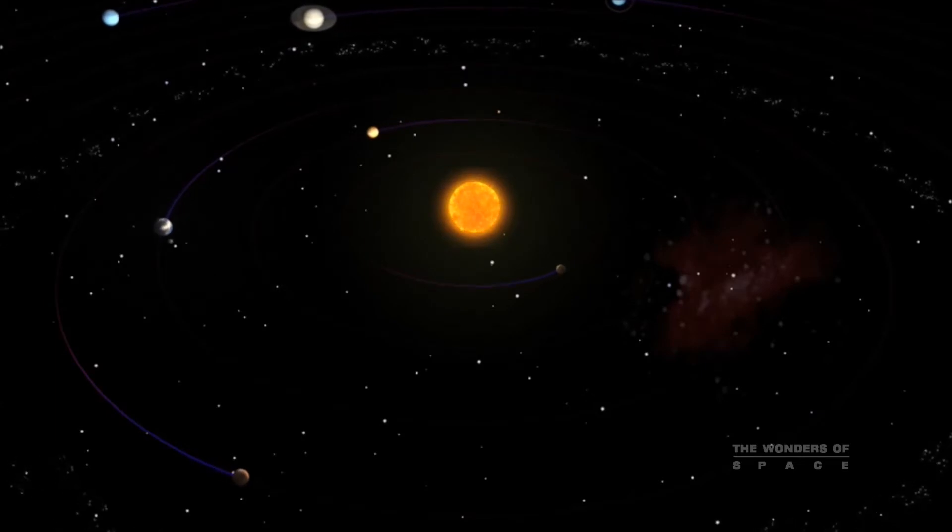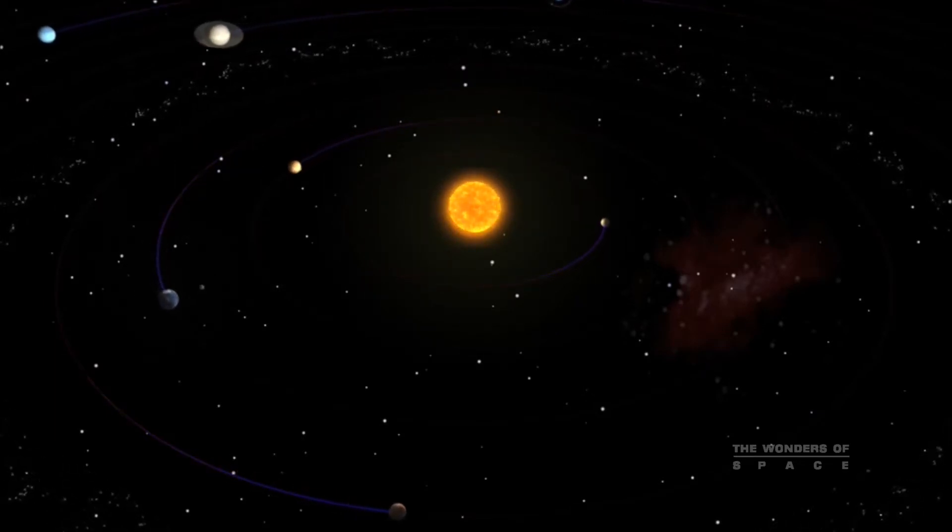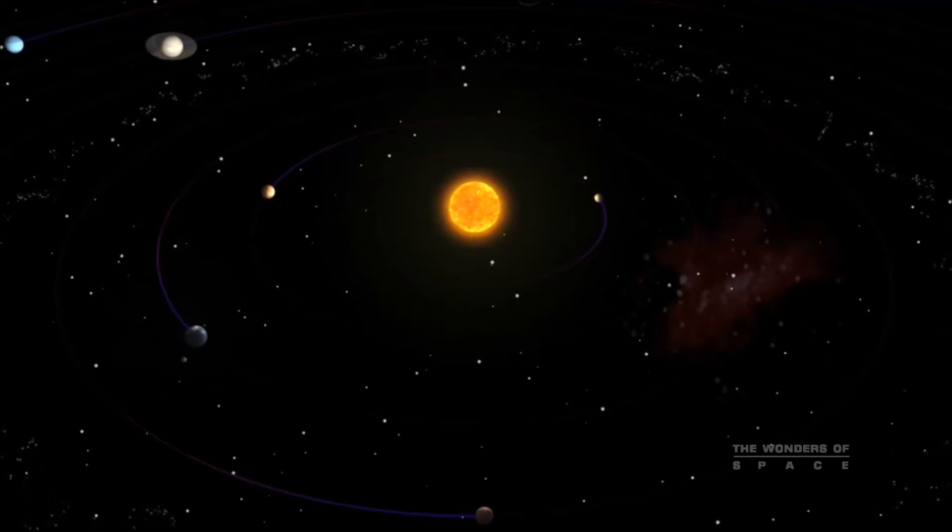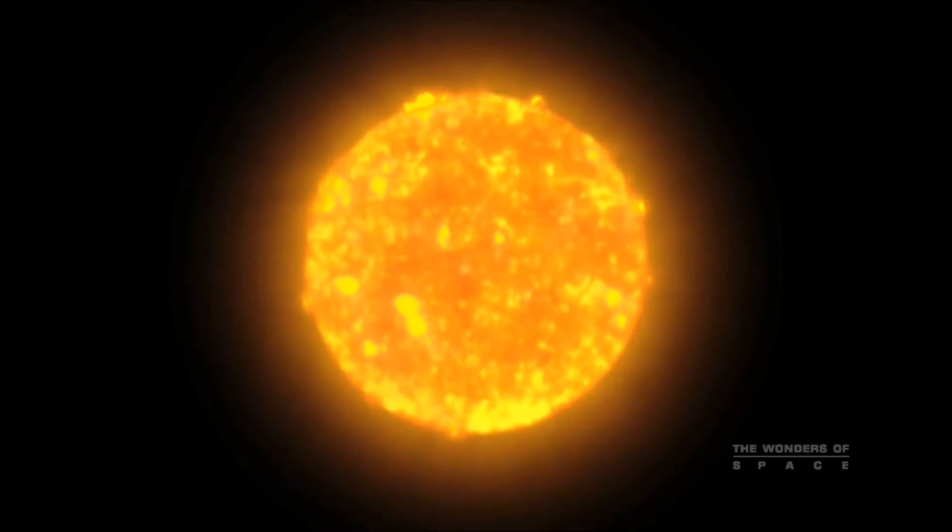As stars go, our Sun is an average yellow star. But it is so massive that it contains 99.8% of all the mass in the solar system. Its radiant energy supports almost all life on Earth, and it drives Earth's climate and weather.